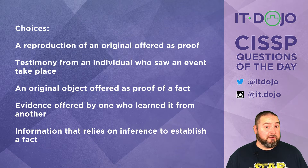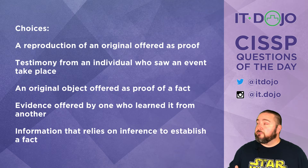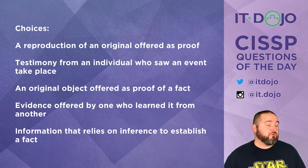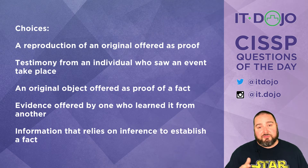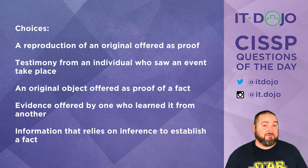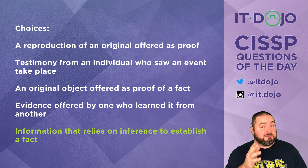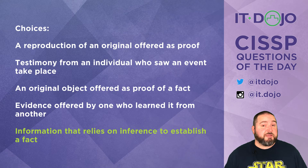That only leaves one choice left. The final item on the list is: information that relies on inference in order to establish a fact. This is a textbook definition of what circumstantial evidence is, and that's the correct answer to this particular question.